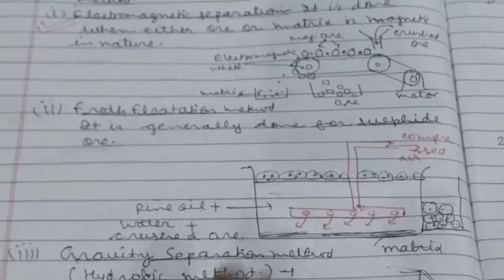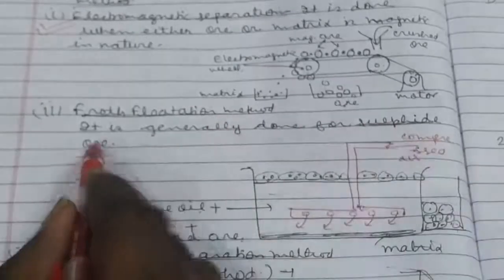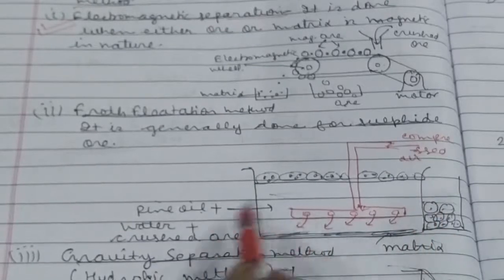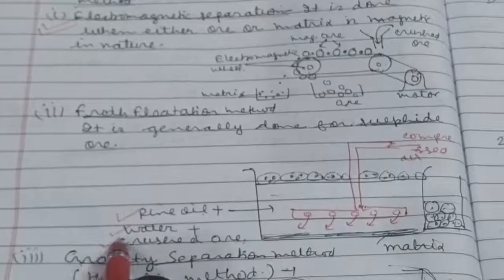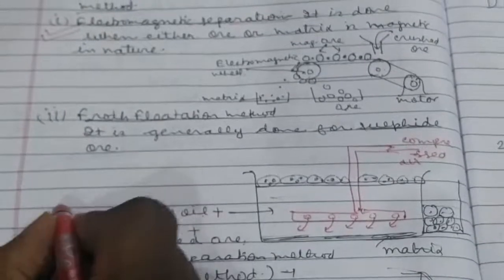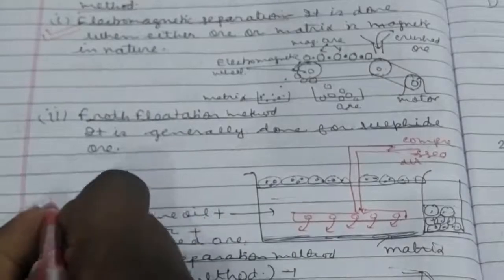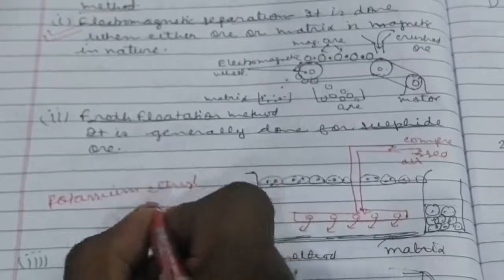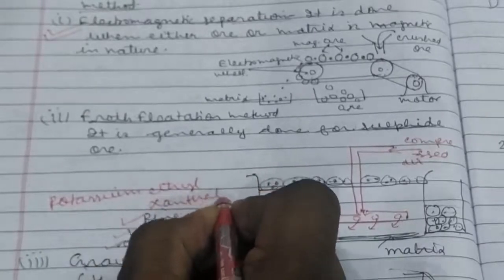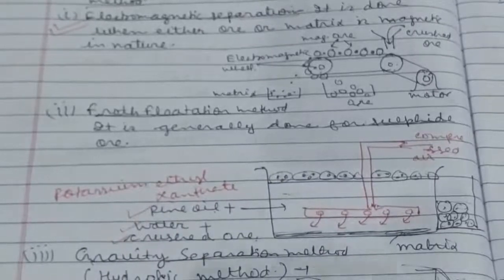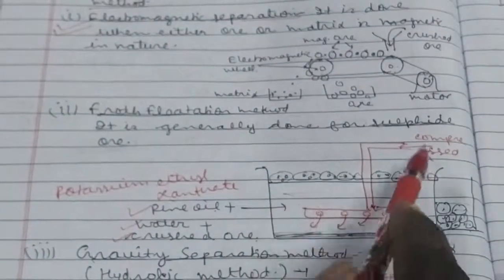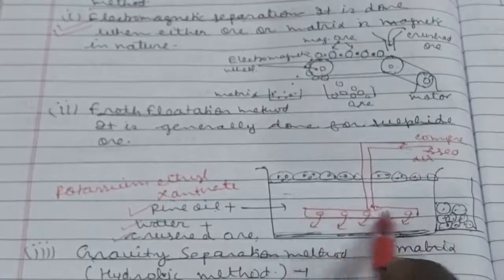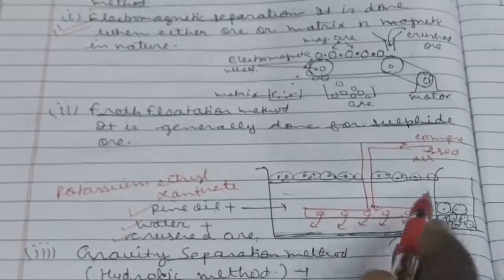Next method is froth flotation method. Froth flotation method is generally done for sulphide ores. In this method, you have to take a steel tank in which there is a solution having pine oil, water, crushed ore, and a frothing agent which is known as potassium ethyl xanthate. This helps in making froth. You will take a tube having a pipe with few holes. Compressed air is passed through this pipe. Air starts circulating the mixture.